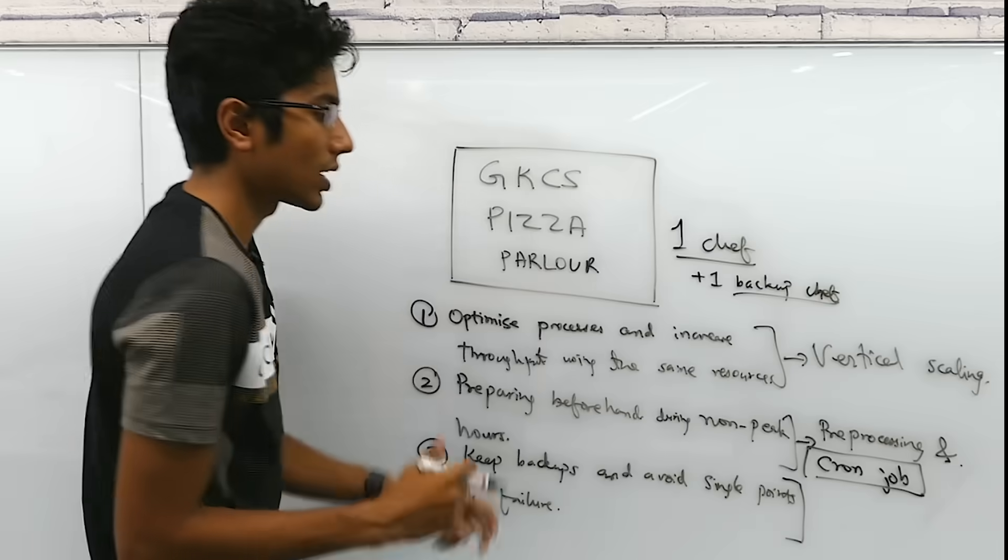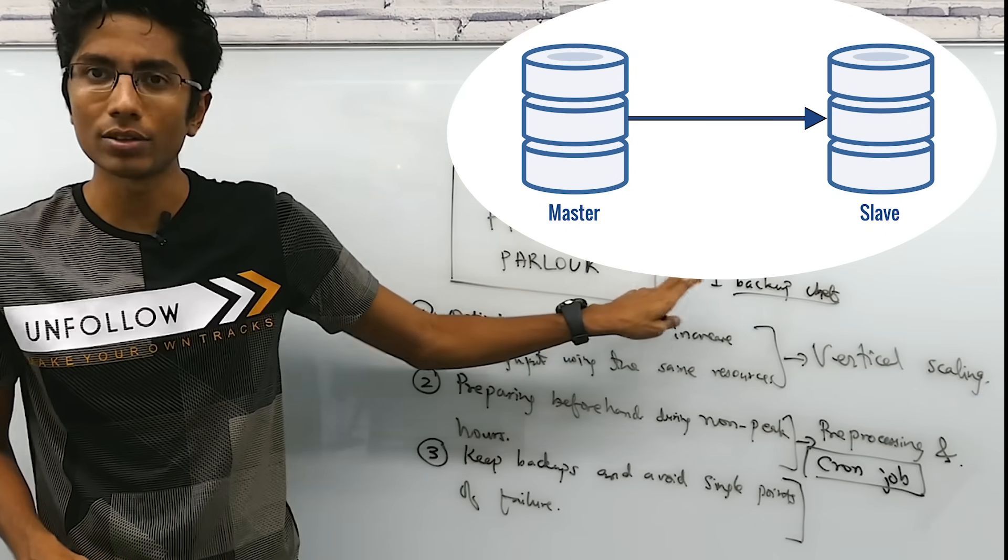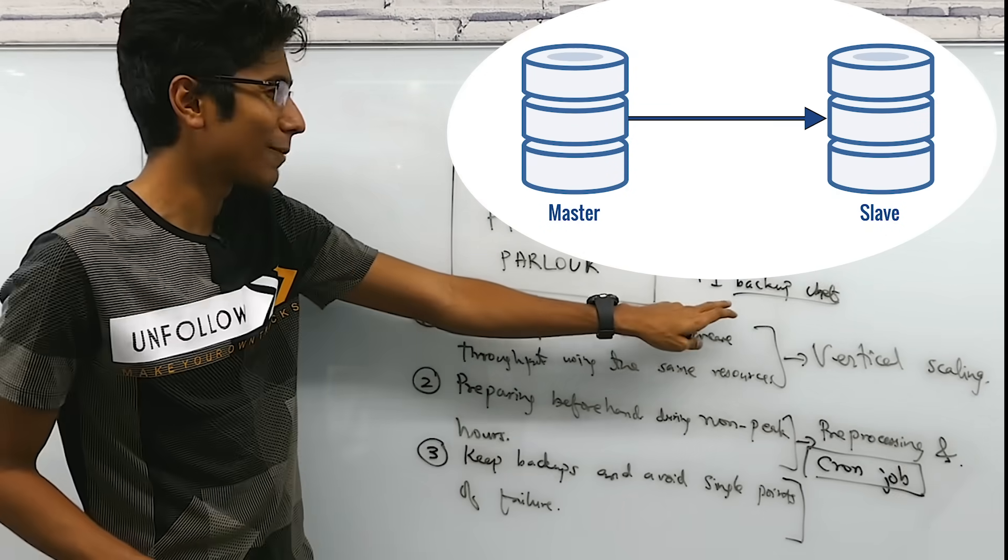For computers, it's something like a master-slave architecture. The master chef and you have a slave chef, which is a lot to say. So that's what we need.